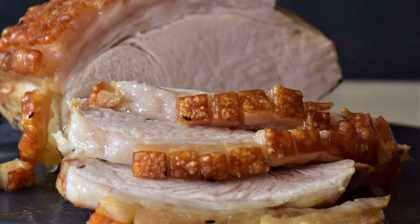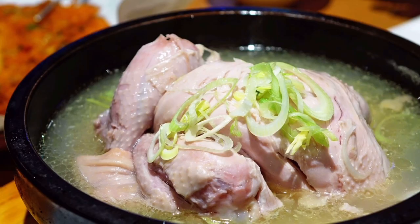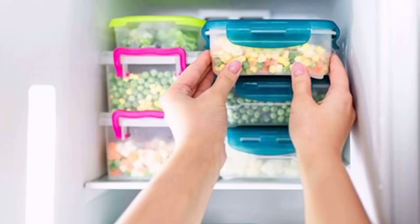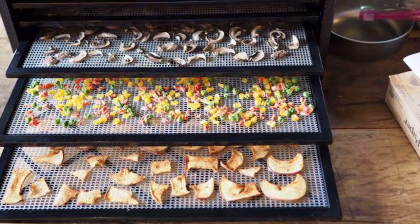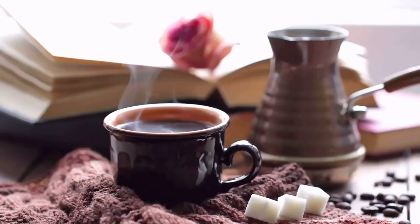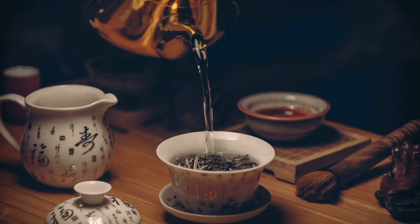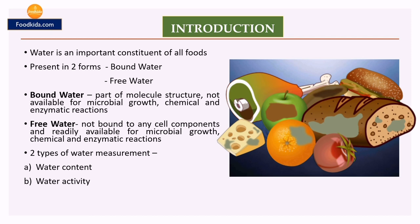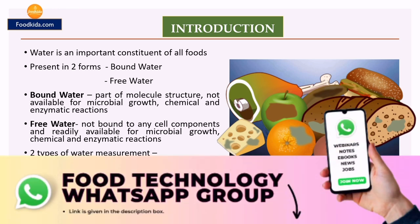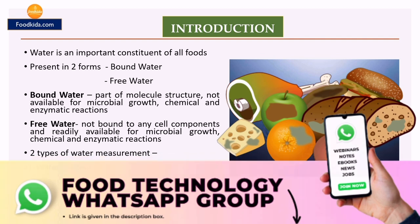Water influences the appearance, texture, and flavor of food. It is involved in most of the changes that take place when food is cooked, and food spoilage is also related to the presence of water. For example, the characteristic flavor of coffee and tea is due to the ability of water to dissolve flavor materials present in tea leaves and coffee powder. Too much water in food can be a danger as it favors the growth of undesirable bacteria and other microorganisms. Water is the controlling factor of microbial spoilage, so it is required to keep the water content of food as low as possible to increase shelf life.